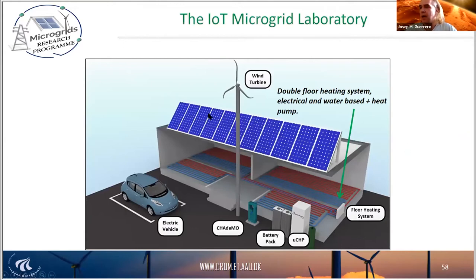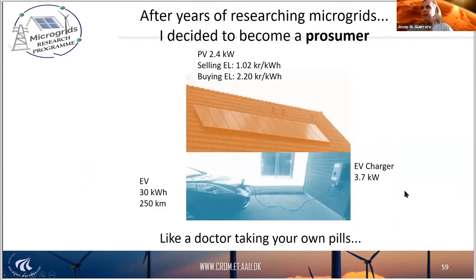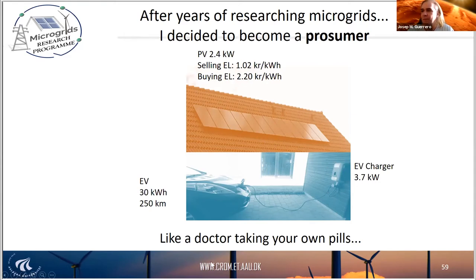This is how our IoT demonstration home looks, together with all the appliances and also the district heating floor system. After years of researching microgrids, I decided to also become a prosumer myself. This is my house — I installed 2.4 kilowatt solar panels. This is my car, a Nissan Leaf with a 30 kilowatt hour battery system, and I also installed an electric vehicle charger of 3.7 kilowatt. So I did like a doctor taking your own pills.